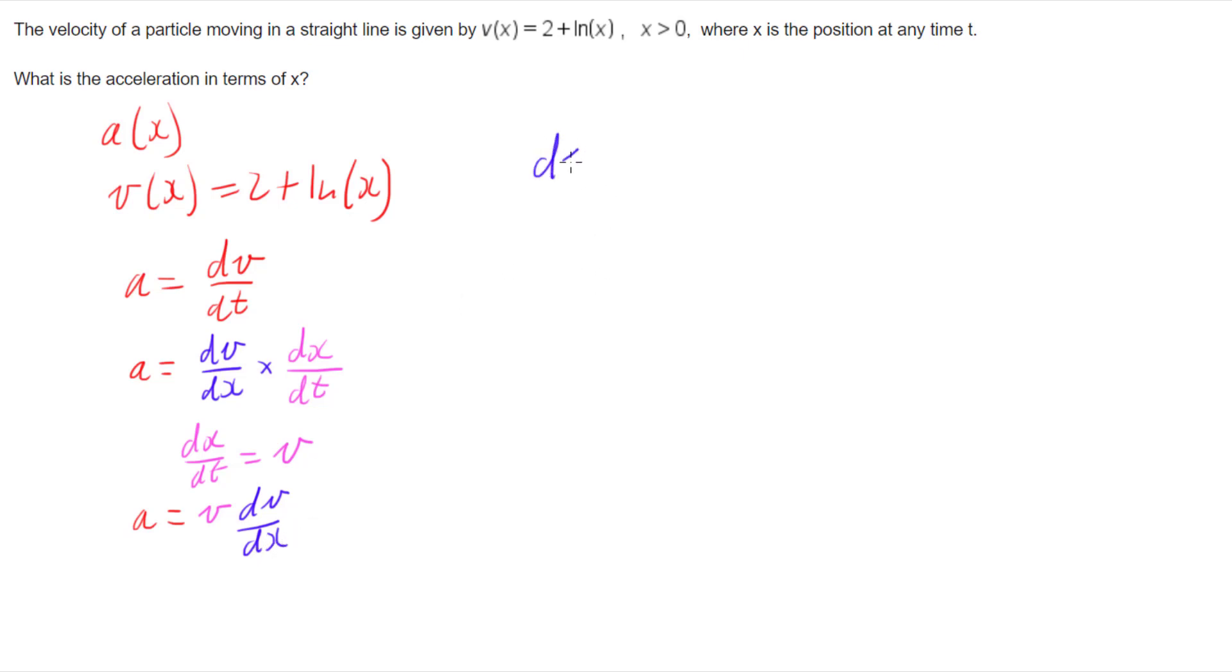Let's find dv/dx. So velocity is 2 + ln(x), and if I derive that with respect to x, the derivative of 2 just cancels out, and the derivative of ln(x) is 1/x.